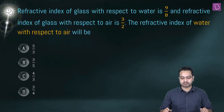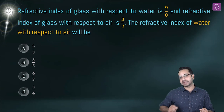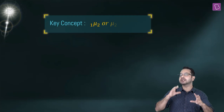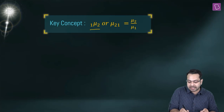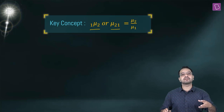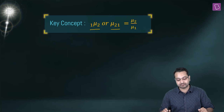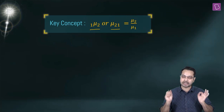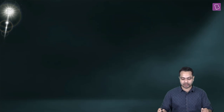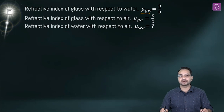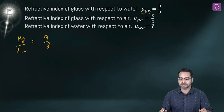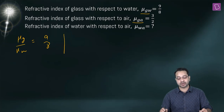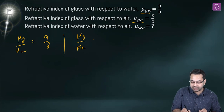New problem: the refractive index of glass with respect to water is 9/8, and the refractive index of glass with respect to air is 3/2. We need to find the refractive index of water with respect to air. The key concept is that ₁μ₂ = μ₂/μ₁. So μ_glass/μ_water = 9/8 and μ_glass/μ_air = 3/2.